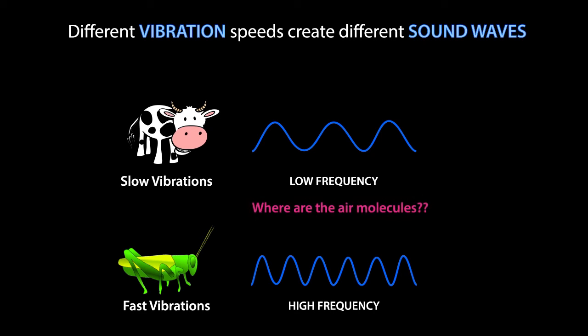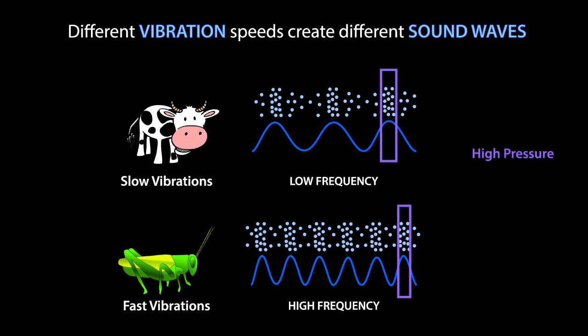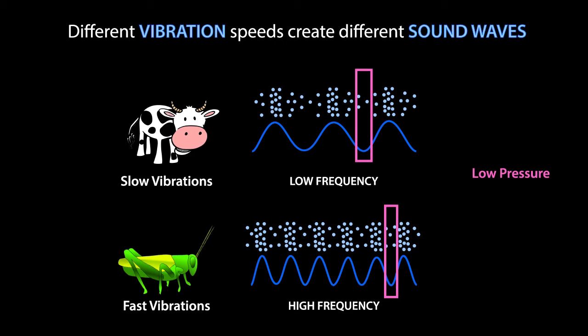Now you may be thinking, wait, where are the air molecules? These sound wave lines represent pressure waves of molecules, where the peaks are areas of high pressure that are packed with molecules, and the valleys are areas of low pressure with fewer molecules.